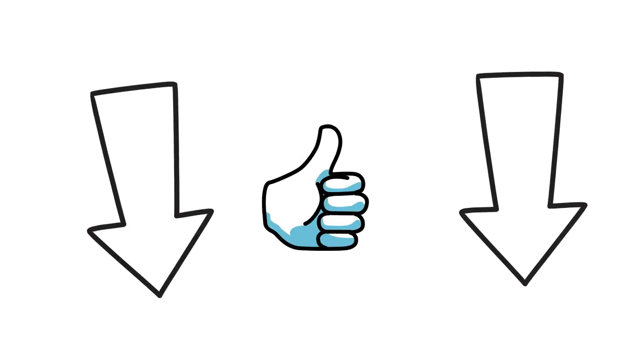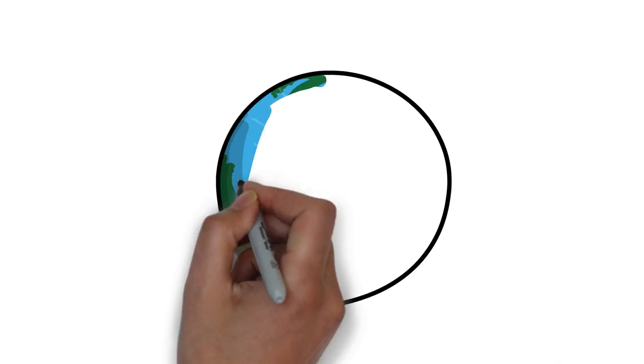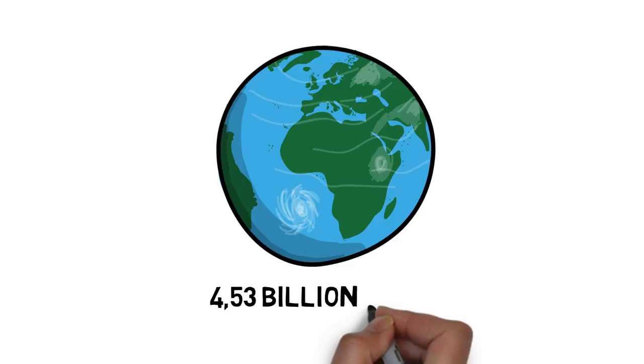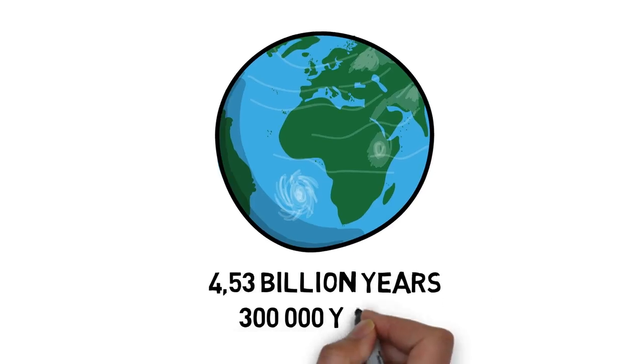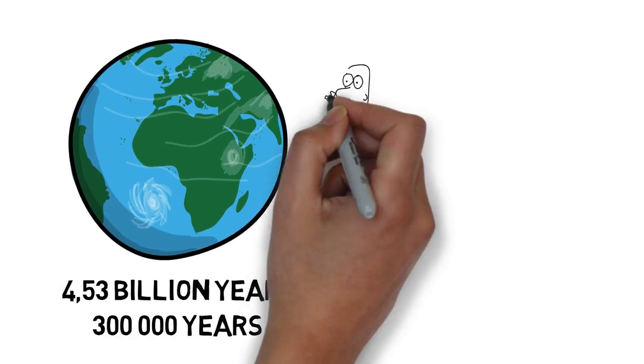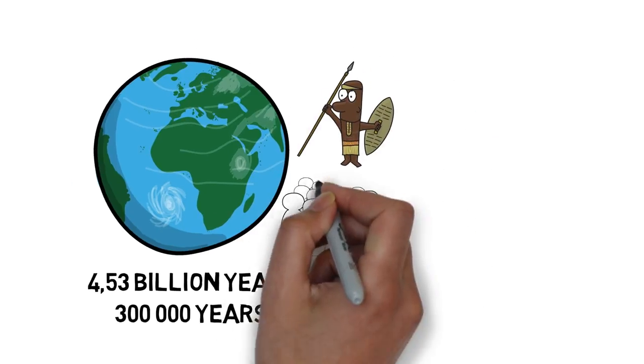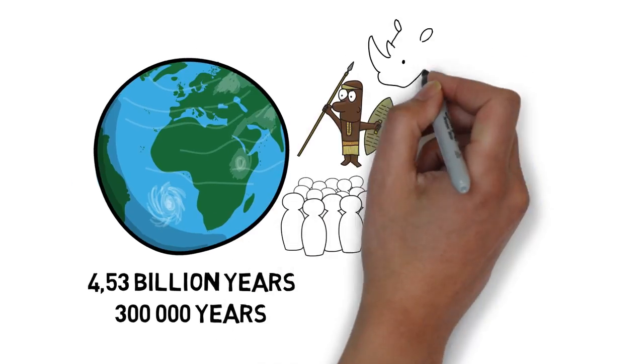Earth is 4.53 billion years old and humans have only been around for 300,000 years. Although we have been around for an incredibly short amount of time, we have achieved so much. No other species has come close to dominating the planet like we have. So how has this all been possible?